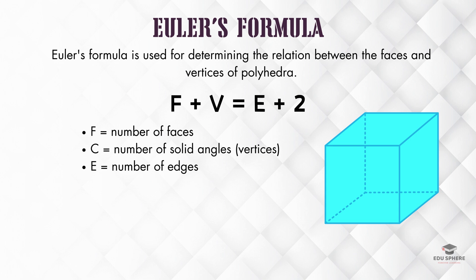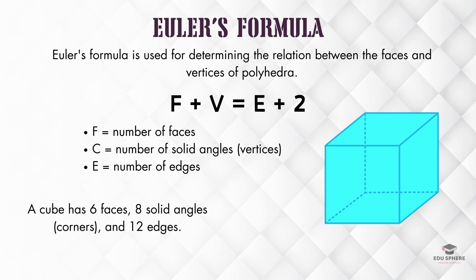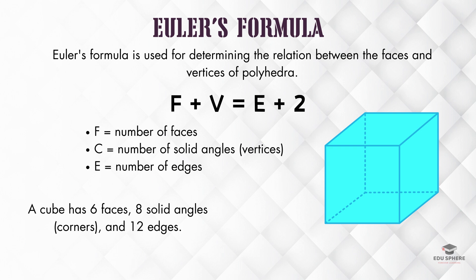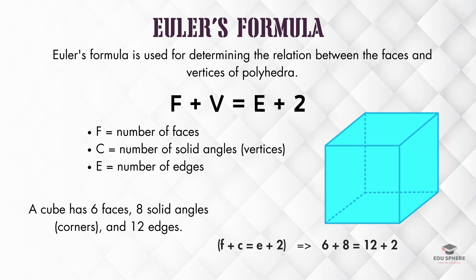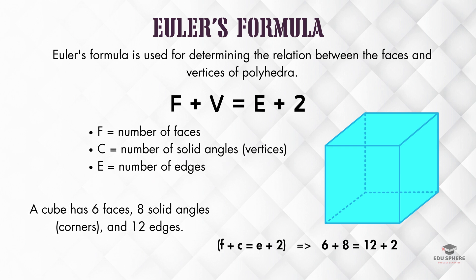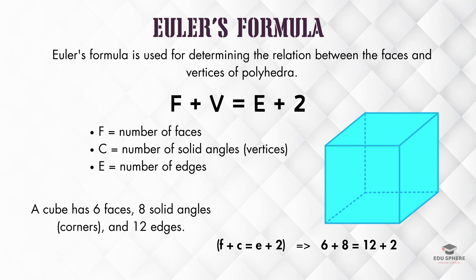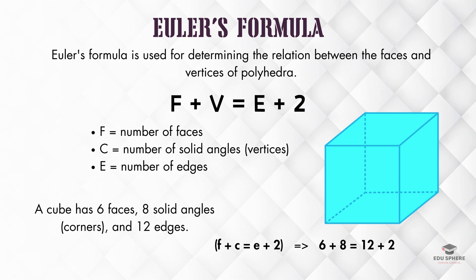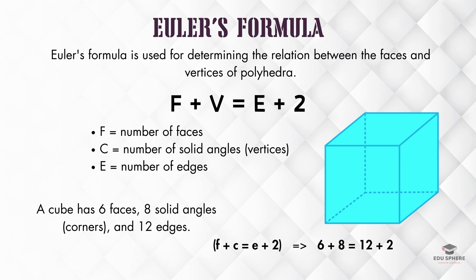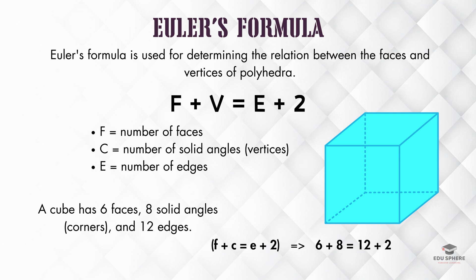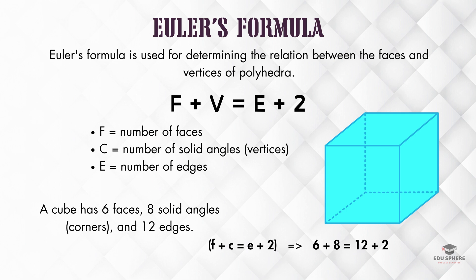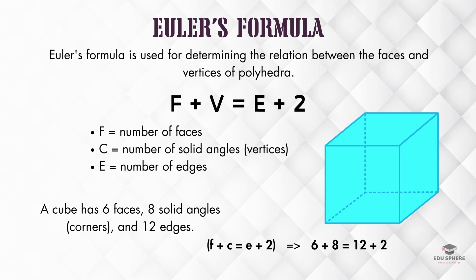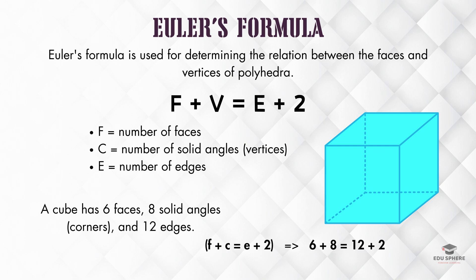Let's test it out with our trusty cube. A cube has 6 faces, 8 solid angles, and 12 edges. Plugging these values into the formula, we get 6 plus 8 equals 12 plus 2, which holds true. So, the next time you encounter a crystal, examine its faces, edges, and vertices. You might even be able to use this formula to determine their quantities. This understanding forms a cornerstone in crystallography.